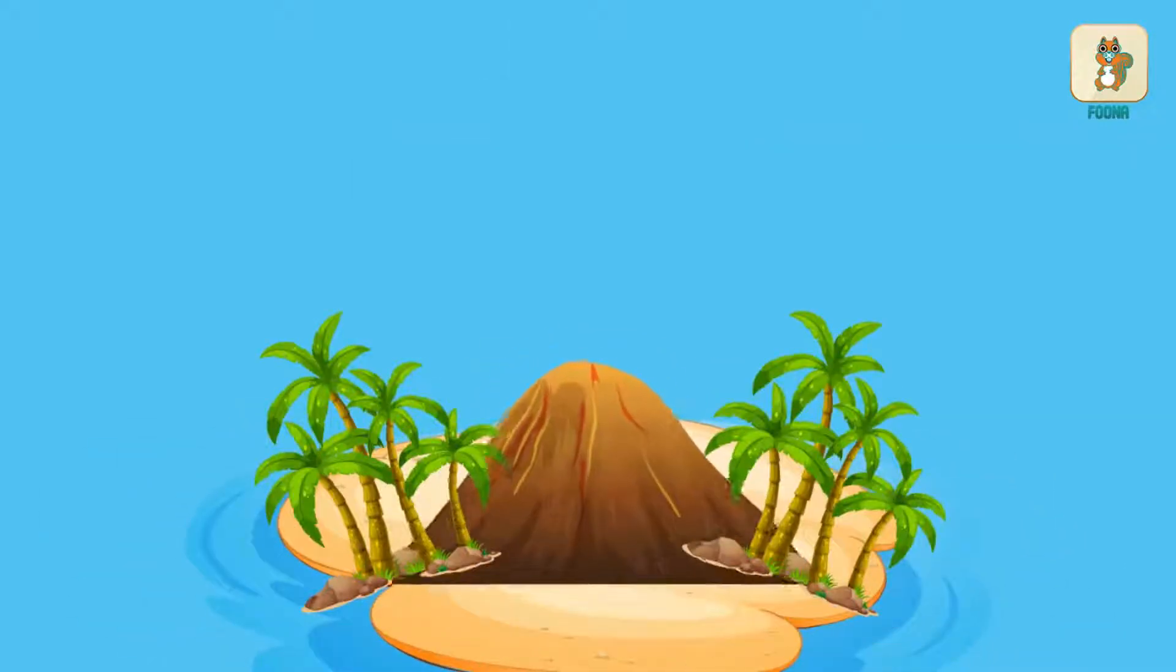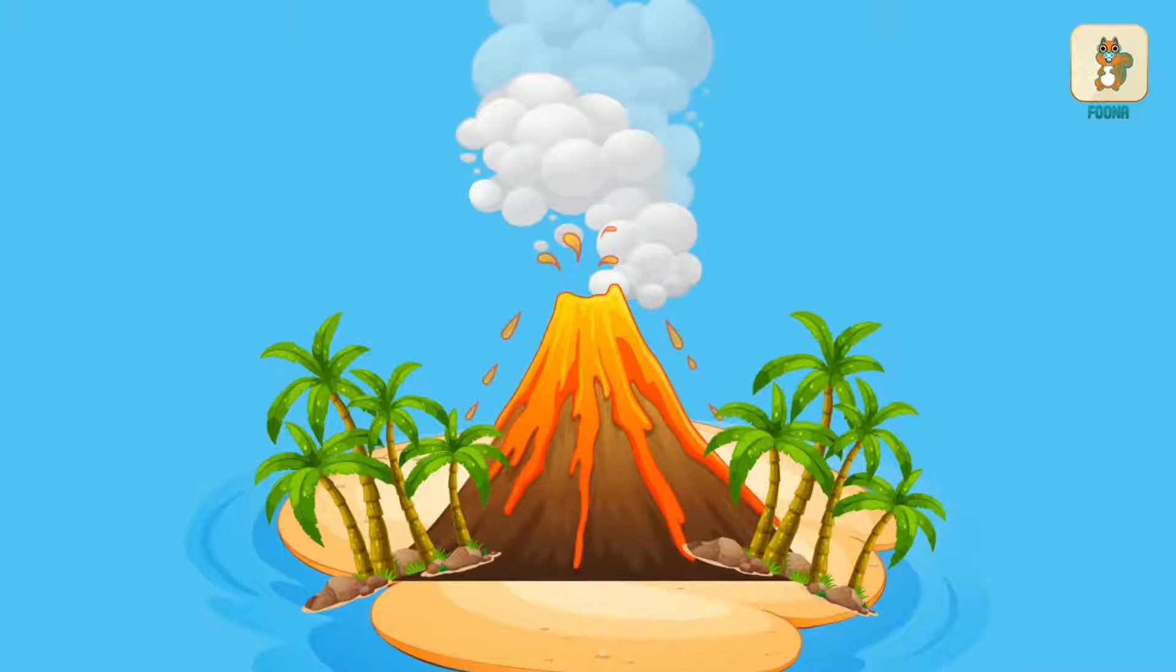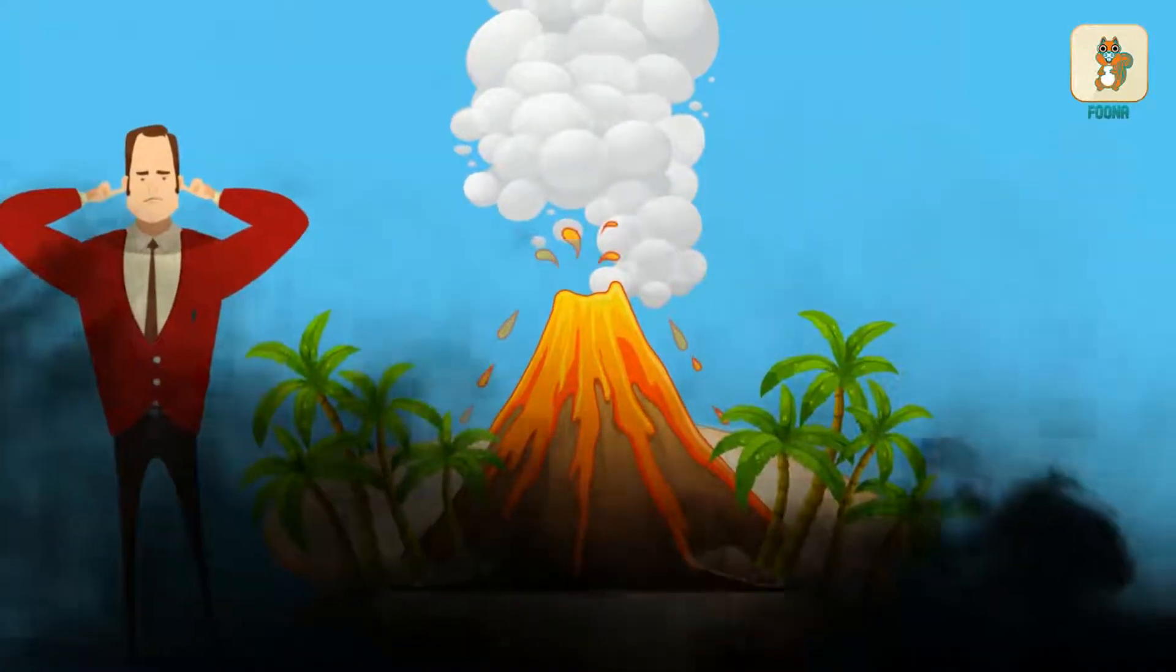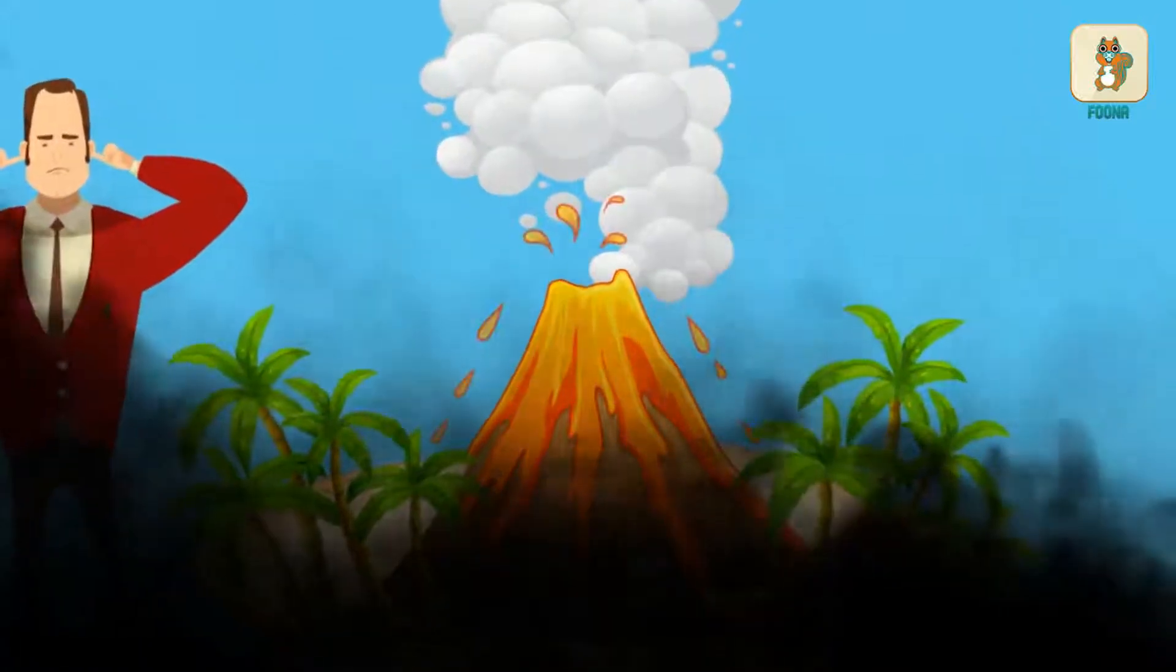Recently, on 4th July, there was a volcanic eruption on an island in Italy. There was a loud noise, a lot of smoke, and hot molten rock and lava spurred out of the volcano.